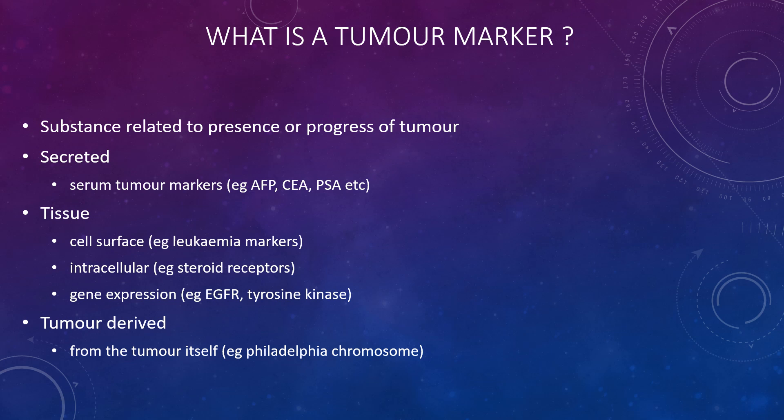There are also tissue cell surface markers such as leukaemia markers, intercellular markers such as steroid receptors, gene expression markers such as EGFR (epidermal growth factor receptor) and tyrosine kinase, and tumour-derived markers from the tumour itself such as the Philadelphia chromosome.